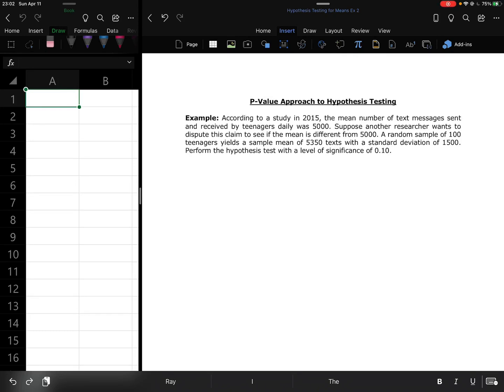And we're continuing on with another example of the p-value approach to a hypothesis test for a mean. For this example, we are looking at a study done in 2015 where the mean number of text messages sent and received by teenagers daily was 5000.